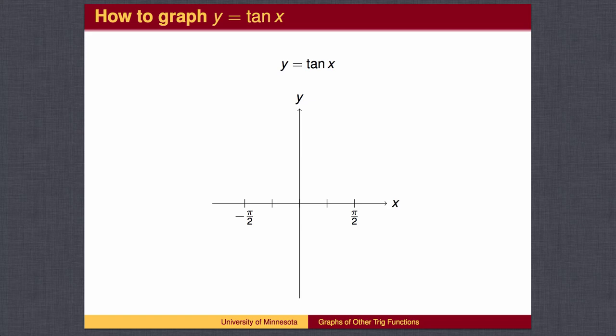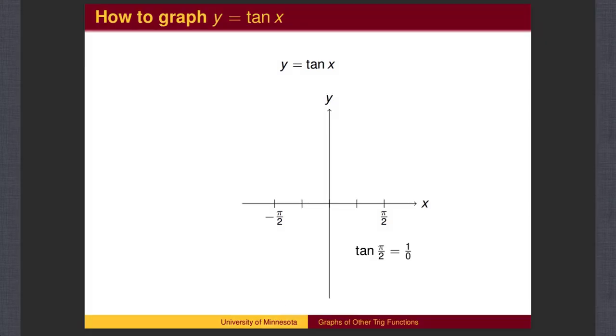Recall that tangent is sine divided by cosine, and that the cosine of x is 0 at negative pi over 2 and pi over 2. At pi over 2, the sine is 1 and the cosine is 0, and 1 divided by 0 is undefined.